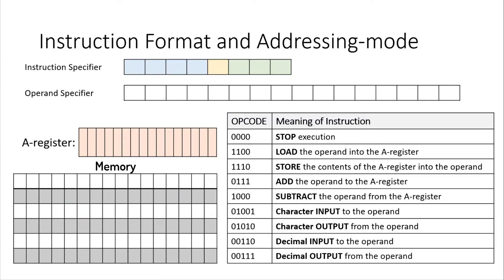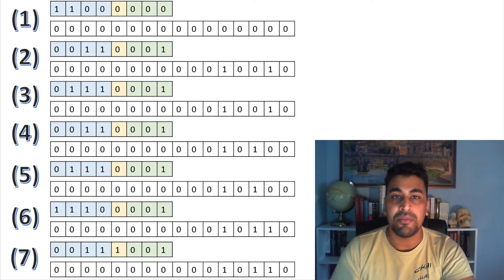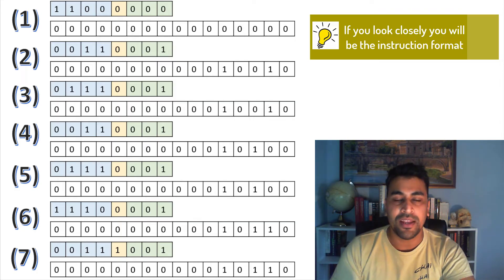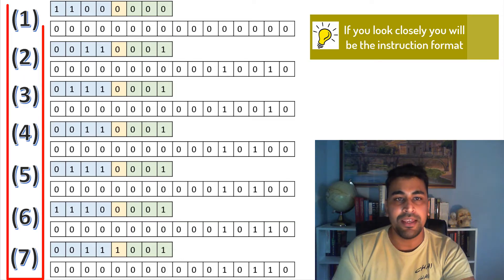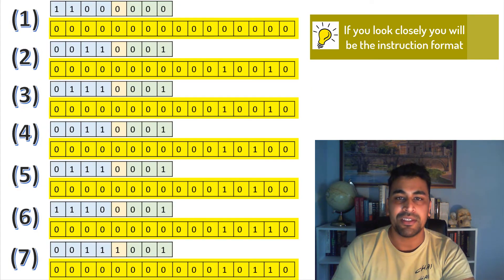Another important component of the processing unit is the A register. The A register is one of several registers in the processing unit and is simply used to store binary values. I like to think of the A register as a table that you can do work on. Here is an example of a machine language program which adds two numbers together. At first glance it looks pretty intimidating, but upon closer inspection we may be able to recognize the instruction format for each of the machine language instructions. I have numbered each instruction from 1 to 7 so that we can more clearly see them. Notice that each instruction contains the instruction specifier and the operand specifier.